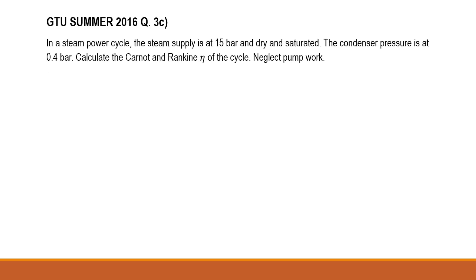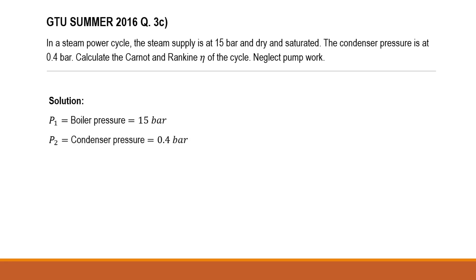This example is taken from Gujarat Technological University summer 2016 question 3c. In a steam power plant, steam is supplied at 15 bar pressure and it is dry saturated. The condenser pressure is 0.4 bar, and we have to find the Carnot cycle efficiency and Rankine cycle efficiency neglecting the pump work. Our calculator computes Rankine cycle efficiency both considering and neglecting pump work. So boiler pressure p1 is 15 bar and condenser pressure p2 is 0.4 bar.